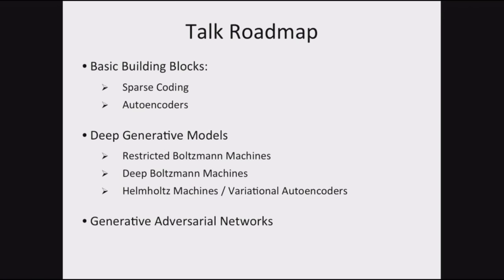My talk is going to be structured as follows. I'll introduce you to the basic building blocks — models like sparse coding, because these are very important classes of models, particularly for folks working in industry looking for simpler models. Autoencoders are a beautiful class of models. The second part of the talk will focus more on generative models: an introduction to restricted Boltzmann machines and deep Boltzmann machines. I'll cover variational autoencoders, which I view as a subclass of Helmholtz machines, and finish with generative adversarial networks.